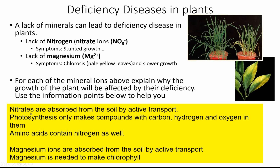Key points to help you explain the deficiencies: nitrates are absorbed from the soil by active transport. Photosynthesis only makes compounds containing carbon, hydrogen, and oxygen — like glucose (C₆H₁₂O₆) — so amino acids, which are important in making proteins, also contain nitrogen, which must come from nitrate. Magnesium also comes from the soil and is needed to make chlorophyll. Try to explain why nitrate deficiency causes stunted growth, and why magnesium deficiency causes slow growth and chlorosis. Give yourself five minutes.